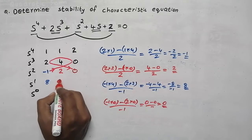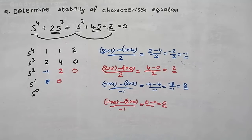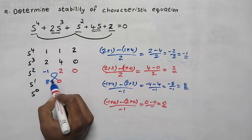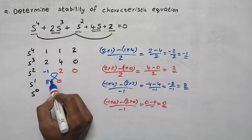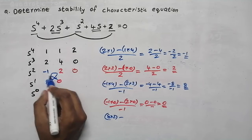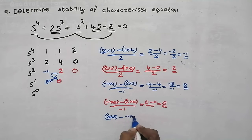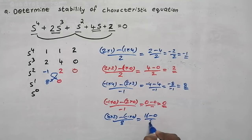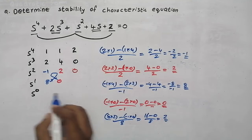To find the last element, starting from 8: 8 into 2 minus 1 into 0, divided by the starting element 8. That gives 16 minus 0 divided by 8, so 16 by 8 equals 2.